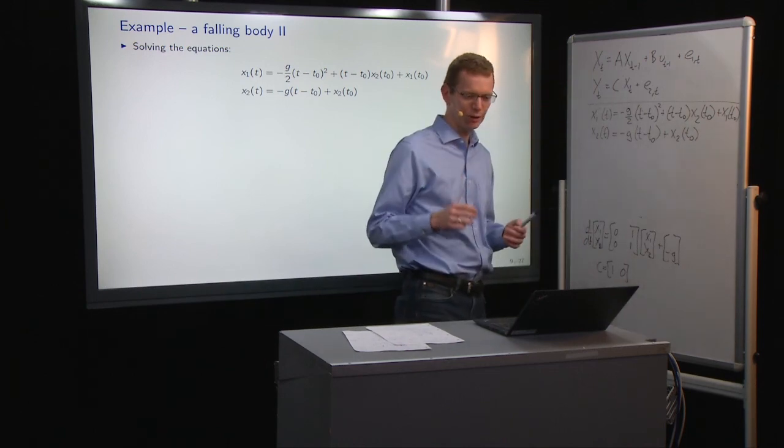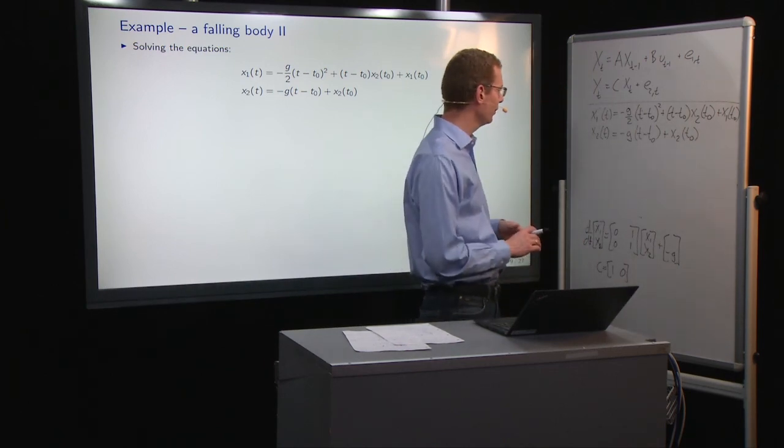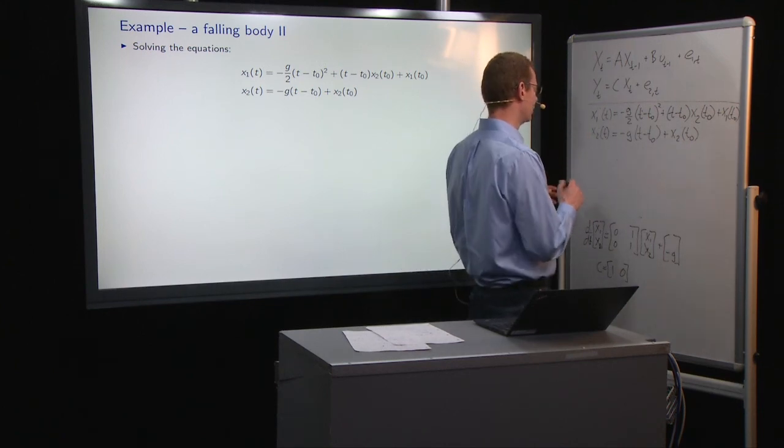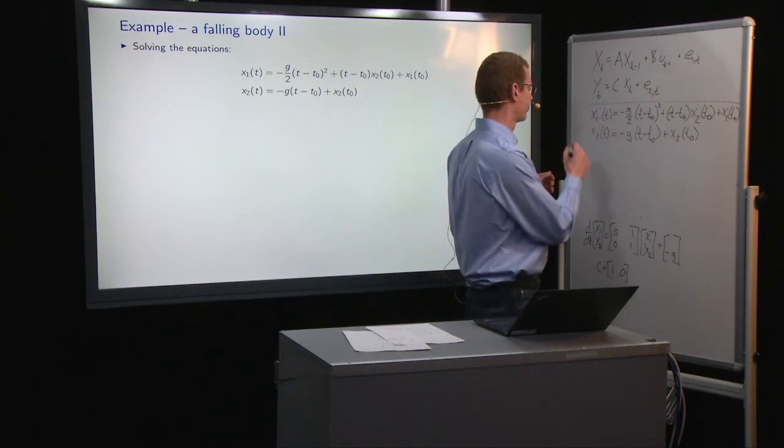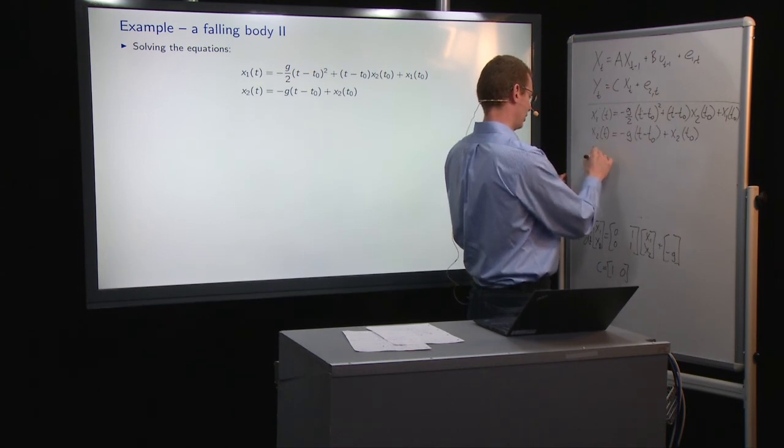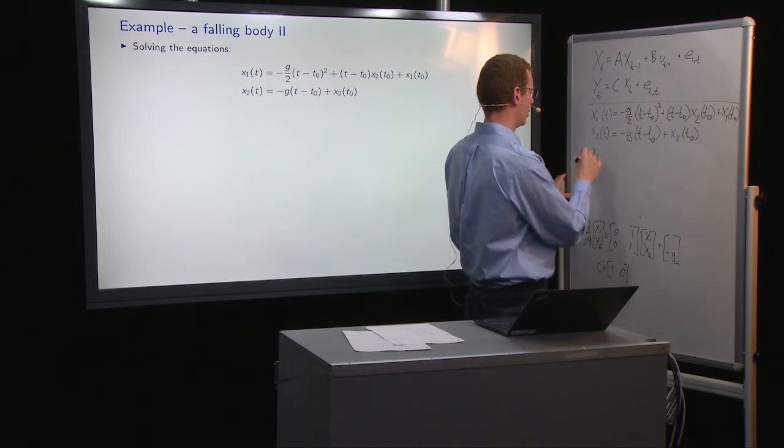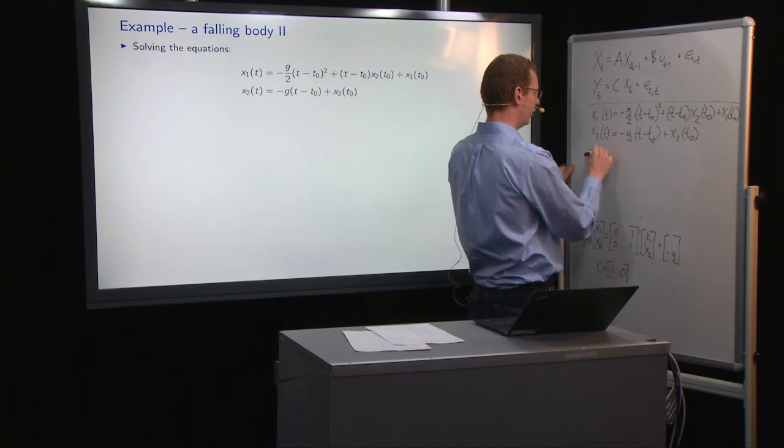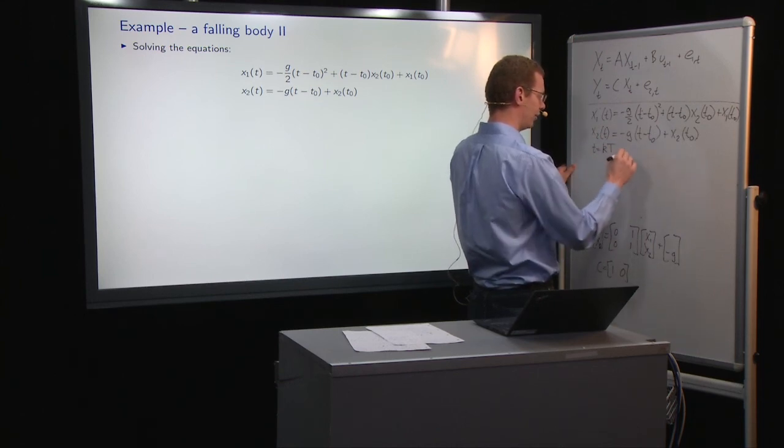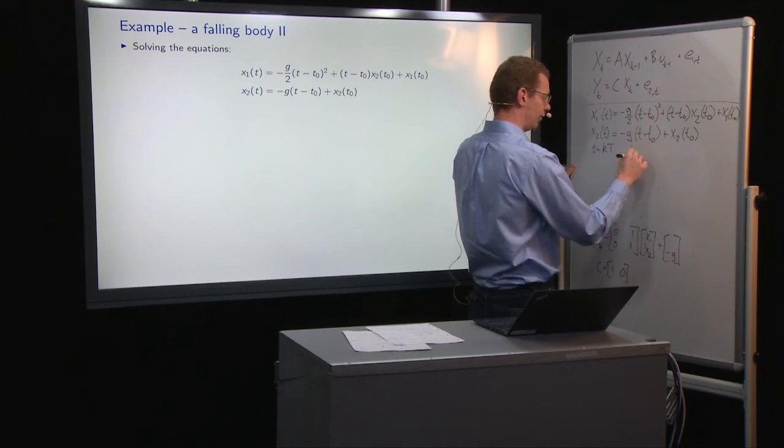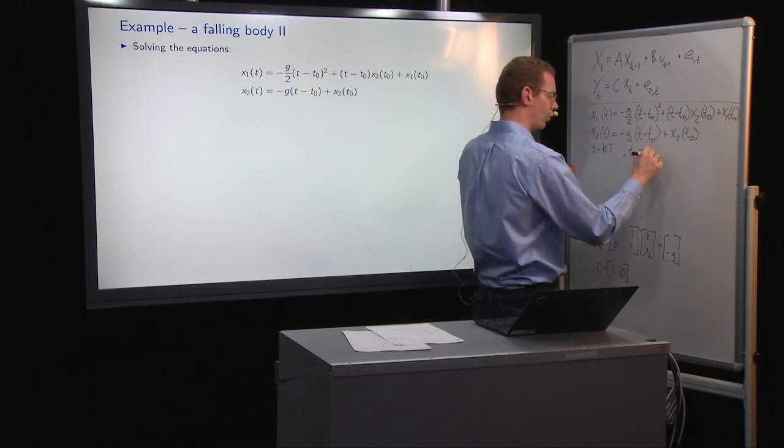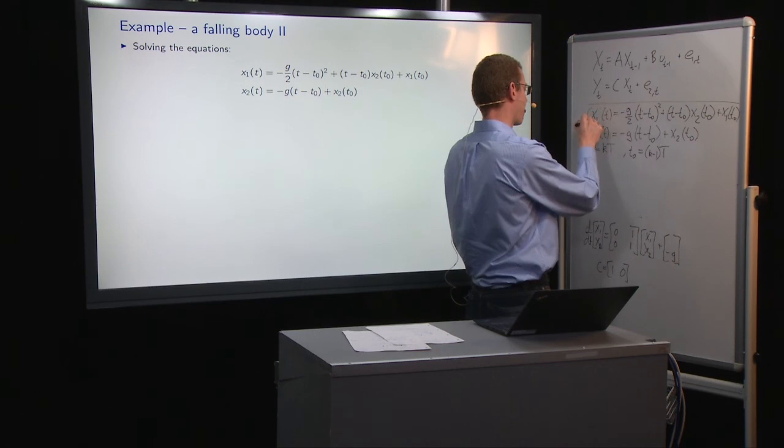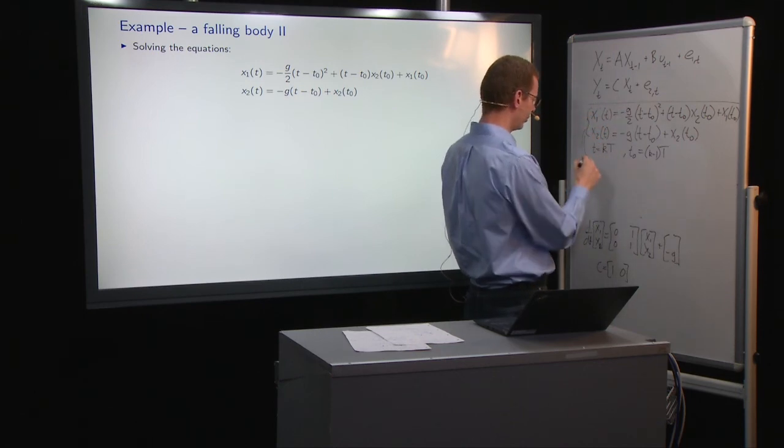Now if we do that, we actually sample this system. So instead of using t, we will use t equals k times the sampling period. Then we can write it as x1. And if we introduce the following, t equals k times the sampling period and t0 equals k minus 1 times the sampling period, and if we plug that in everywhere, then this leads to the following discrete time.